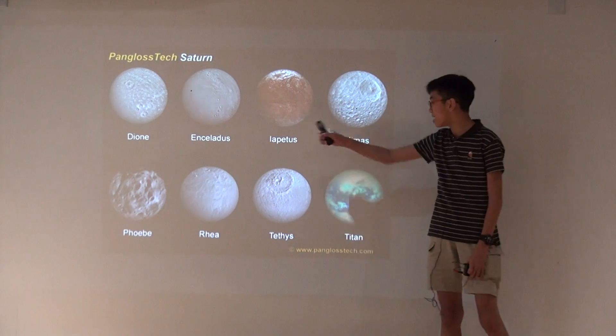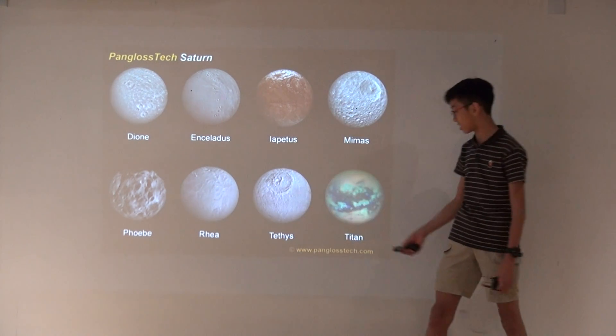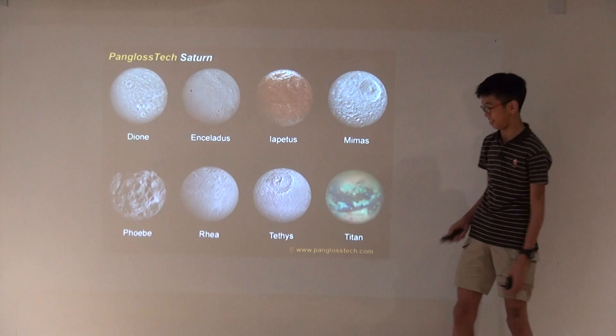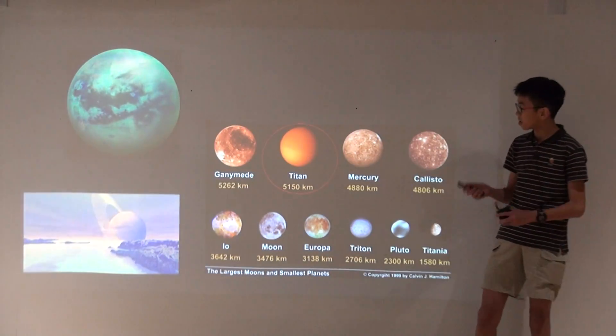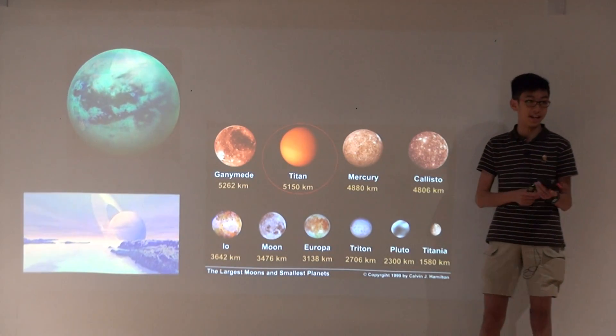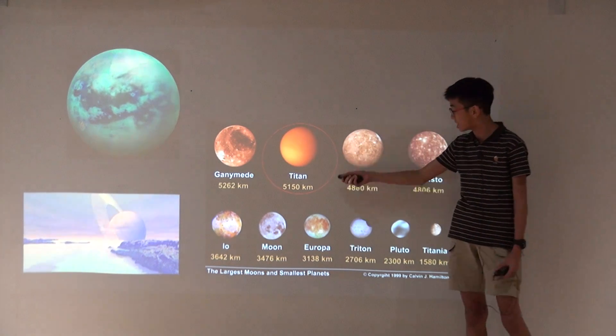So the main eight moons on Saturn are these, and we will be talking about each of them and their characteristics. So first it will be Titan.